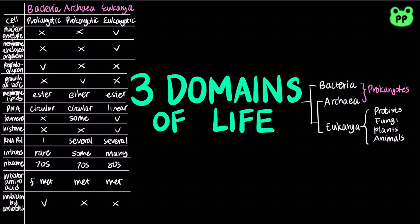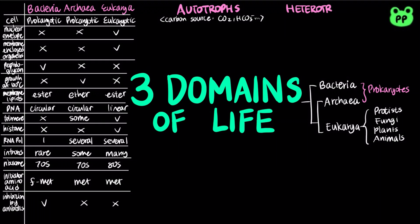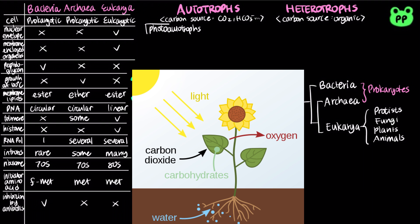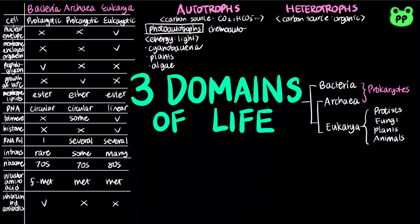Next, I'm going to talk about different nutritional modes found in organisms. Organisms that need only carbon dioxide or related compounds as a carbon source are called autotrophs, whereas organisms that require at least one organic nutrient, such as glucose, to make other organic compounds are known as heterotrophs. There are two types of autotrophs. Photoautotrophs derive their energy from light, including cyanobacteria, plants, and some algae.